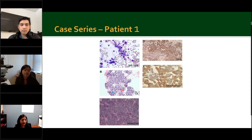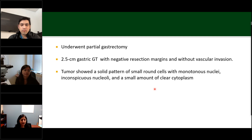On the Diff-Quik slide, small to medium round tumor cells with centrally located nuclei and scant to moderate cytoplasm are seen. The cell block shows sheets of small round cells with centrally located nuclei and clearing of the cytoplasm. Some fused cells appeared as signet rings. The resection section shows similar histomorphologic findings of sheets and nodules of small round-to-ovoid cells. On immunohistochemistry, the cells are diffusely positive for SMA and focally positive for synaptophysin. The patient underwent gastrectomy; the 2.5-centimeter tumor showed negative resection margins, no vascular invasion, and a small solid pattern of round cells with monotonous nuclei and small amounts of clear cytoplasm.